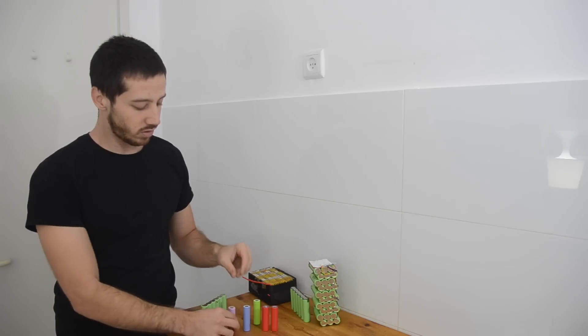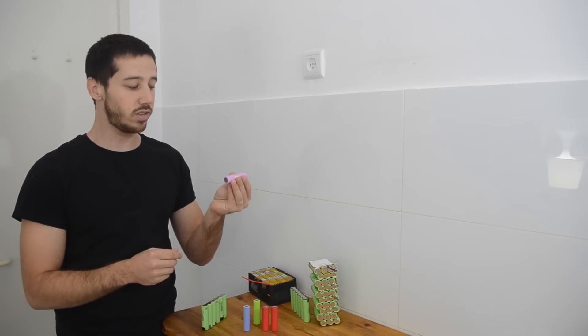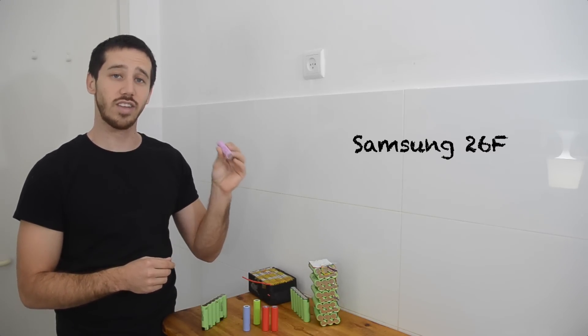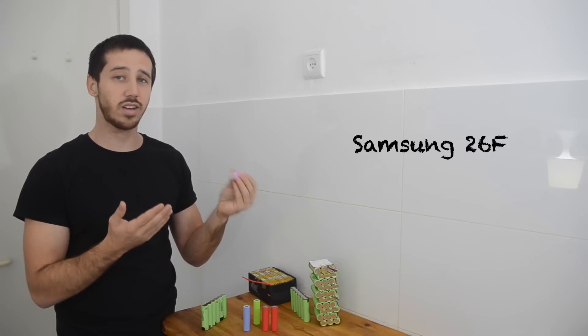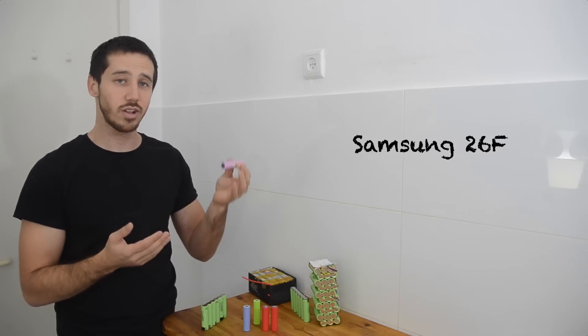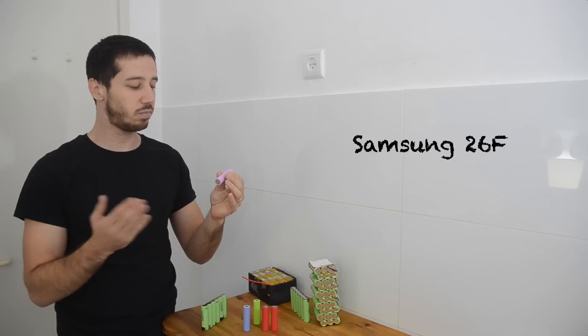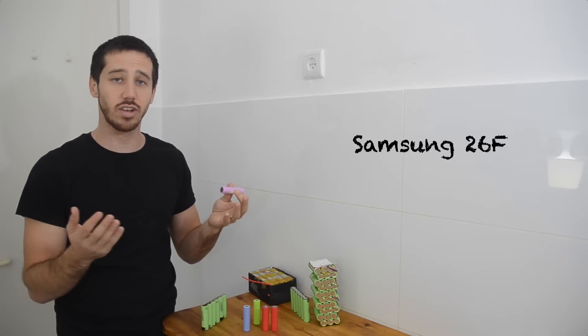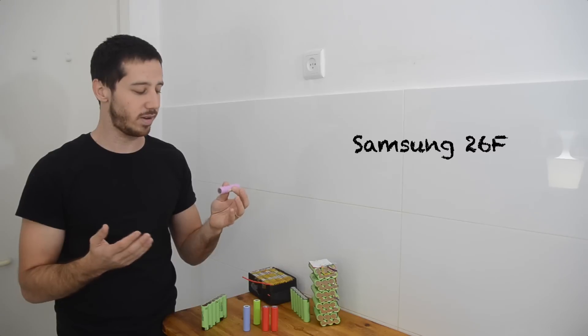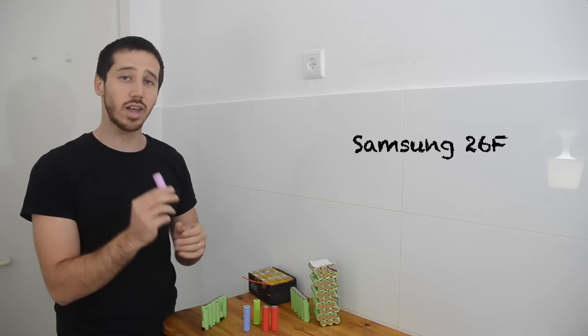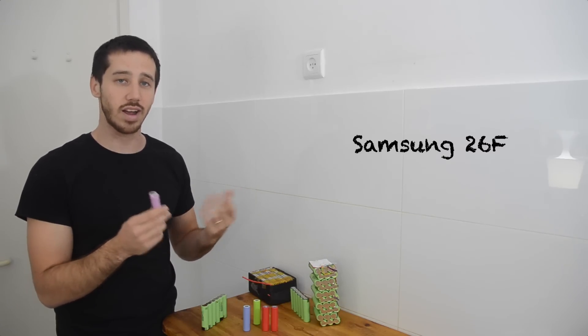Some other cells that I've often used. These are sort of an oldie but a goodie. These are the Samsung 26F cells. These are one of the most economical cells. They're really cheap but they're basically the cheapest good quality cells you can get. The best deal on a name brand. These only have 2.6 amp hours though so they're not very high capacity.